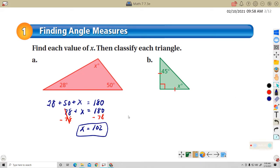And then to classify this triangle, 102 is greater than 90. So this is obtuse. And the other two angles are not equal to each other. So this is obtuse scalene. All the angles are different sizes. I think that's the name of some TikTok star.